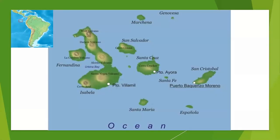Now, these islands have on them big craters. Those aren't actually craters — those of you who are geology buffs know that those are too big to be a crater. Those are calderas, the collapsed top of large volcanoes.